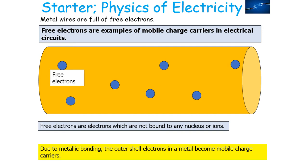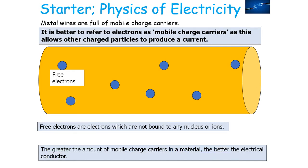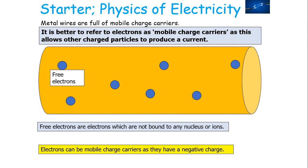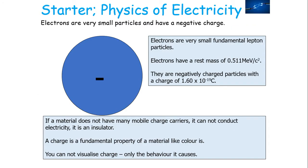Due to metallic bonding, the outer shell electrons in the metal become mobile charge carriers. It's better to refer to electrons as mobile charge carriers, as this allows other charged particles to produce a current, such as a sodium ion. Electrons can be mobile charge carriers because they have a negative charge. Electrons are very small particles and are fundamental — they are what we call a lepton and cannot be broken down any further.